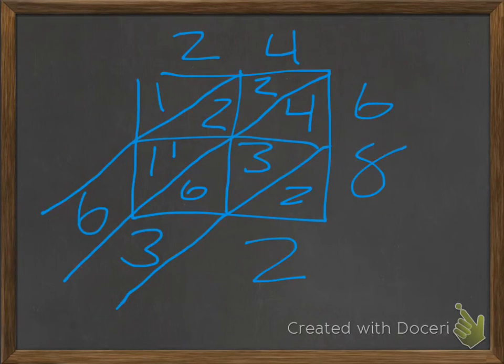So, 6, and then 1. So your answer would be 24 times 68 equals 1,632.